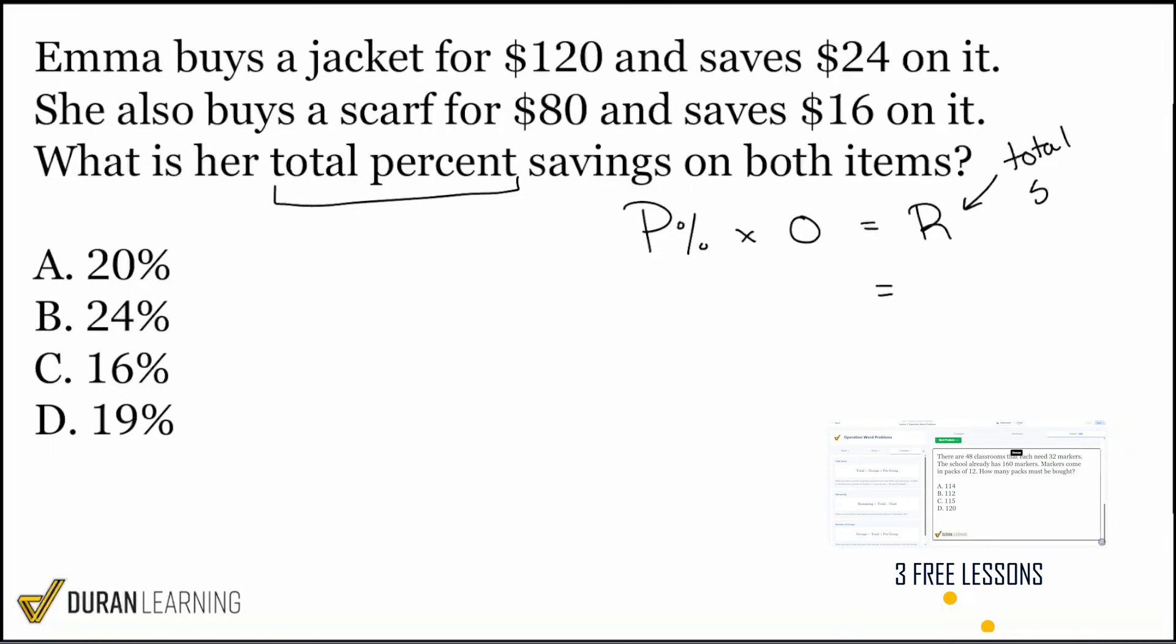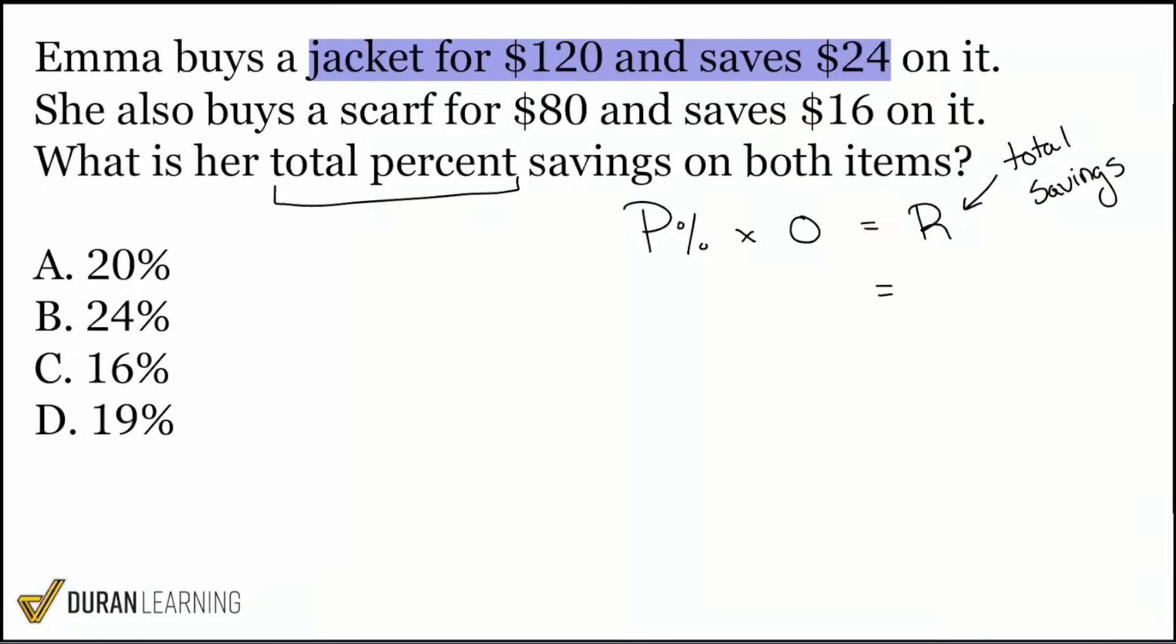So if we want the total percent savings on both items, we are going to need to include the total savings here. Right there. So with that said, everybody, let's take a look at our items. We have a jacket for one hundred and twenty dollars and we save twenty four dollars on it. So when we take a look at the total savings, we'll have twenty four dollars plus the sixteen dollars and that'll be forty. That is our total savings.